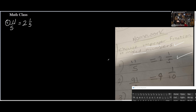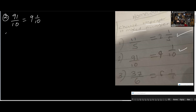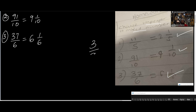Number 2: 91 over 10. The number of 10s in 91 is 9, which is 90. It remains 1 over 10. So 9 and 1 over 10 — your answer is correct. Number 3: 37 over 6. How many 6s in 37? That's 6, which is 36. Remove 36 from 37 and you have 1 over 6. So 6 and 1 over 6 — also correct. That makes 3 out of 3 correct.